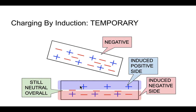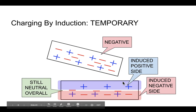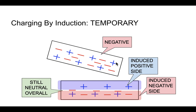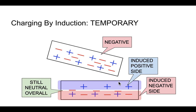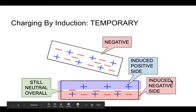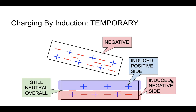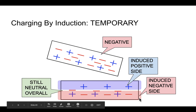We would call this an induced positive side — that's a fancy term — but basically it means that this is a very temporary type of charge. This object is still a neutral object. Make no mistake, we still have the same number of positives as we do negatives. It's just that when we bring this negatively charged object close to it, it pushes away these negative charges and just leaves the positive charges behind. And as a result, this edge here kind of takes on this positively charged sort of characteristic. On the opposite side, you can see a collection of negative charges in higher frequency than the positive charges, so that side becomes almost like a negative-ish type of side.